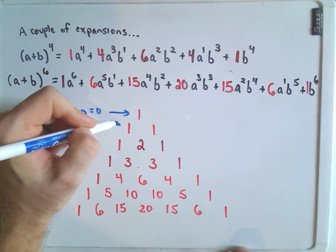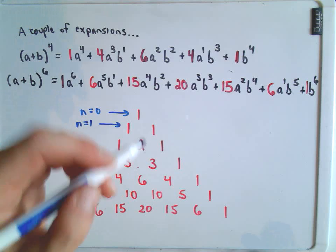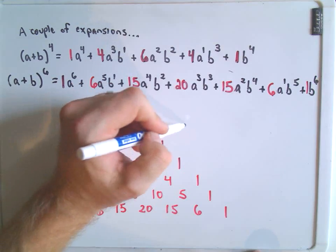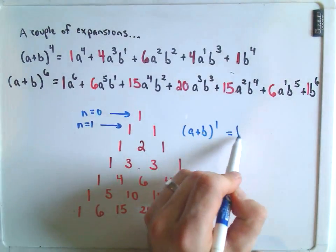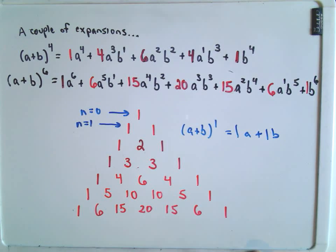The second row is going to correspond to the exponent of n equals 1. And again, that makes sense. If you had a plus b to the 1st power, what are you going to get? You're going to get 1a plus 1b. So that certainly is in agreement.